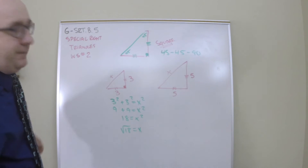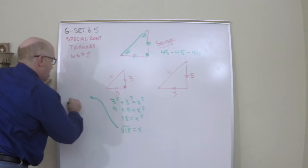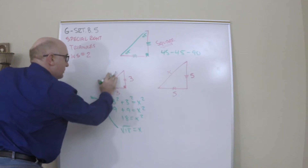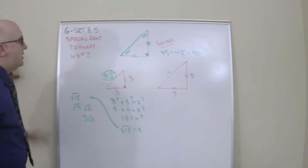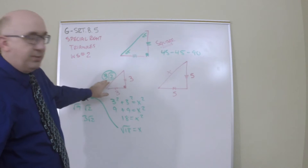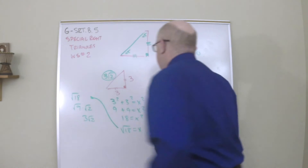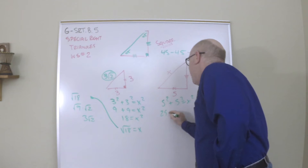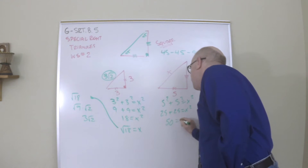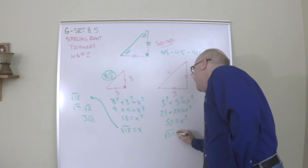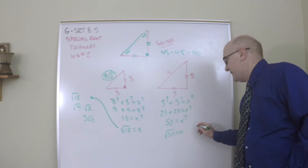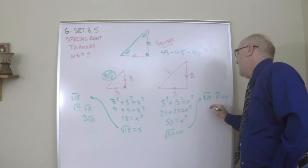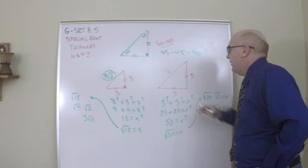Simplifying the square root of 18: the square root of 9 times the square root of 2 gives us 3√2. So this is 3² + 3² = (3√2)². Now doing similar math with legs of 5: 5² + 5² = x², so 50 = x². The square root of 50 simplifies as √25 × √2, giving a hypotenuse of 5√2.